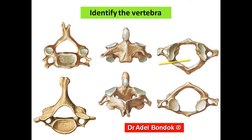The groove above the posterior arch of the atlas is related to two structures: the suboccipital nerve — the dorsal ramus of C1 — and the vertebral artery, specifically the third part of the vertebral artery.